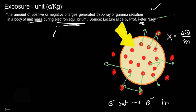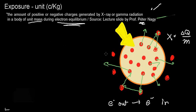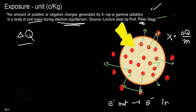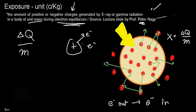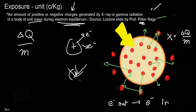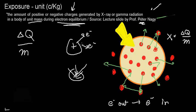Electron equilibrium means when electrons stop moving — when the sum of electrons going out and the sum going in has stopped. At that point, we measure the change in charge over the unit mass. If electrons were lost, the tissue is more positive; if gained, more negative. That is the exposure dose concept.